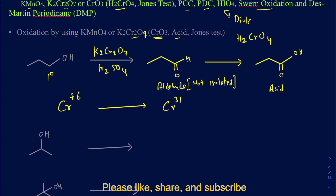Chromium gets reduced to Cr3+. Those two chromium oxidation states have different colors: chromium 6+ is orange in color, and chromium 3+ is green to bluish in color. So when you add Jones reagent — a combination of dichromate with acid — to a primary alcohol, it starts out with an orange solution but eventually turns green-blue. That color change tells you it's a positive Jones test.